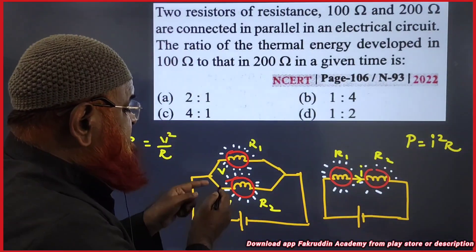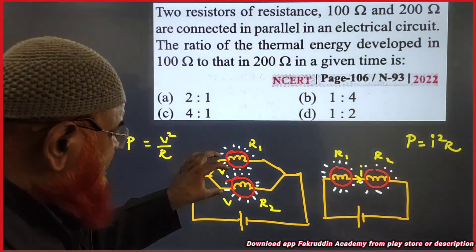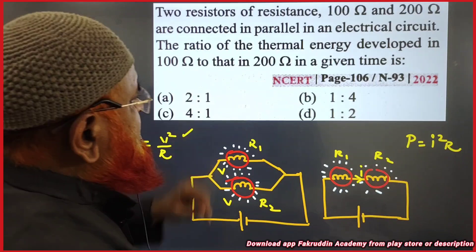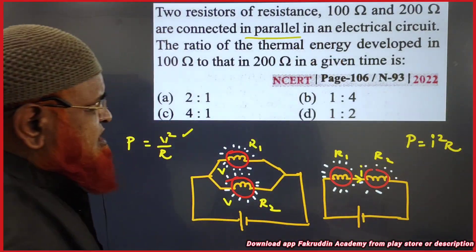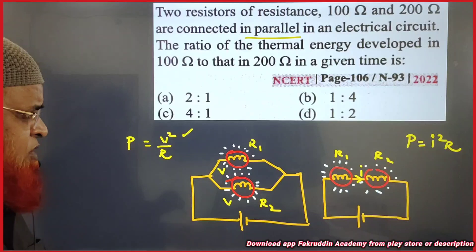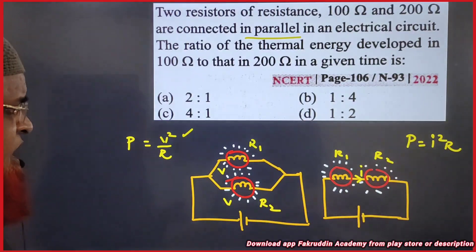When parallel connection is given, potential is same. When potential is same, we will apply the formula in which potential is present. So if you observe here, it is a case of parallel connection. As it is a case of parallel connection, we will consider the parallel circuit in which potential is going to be same here.